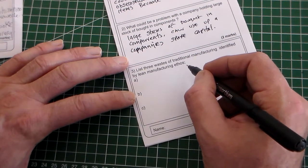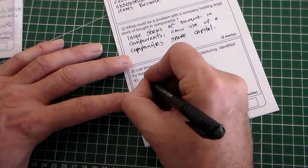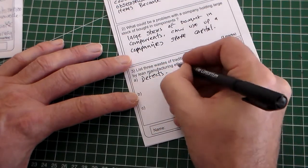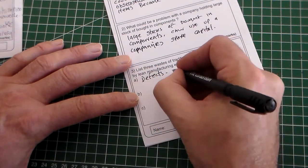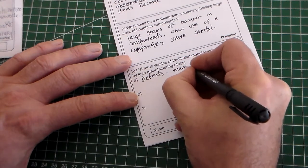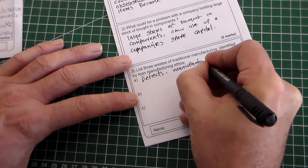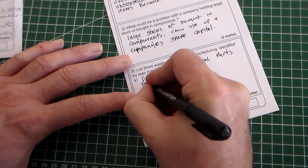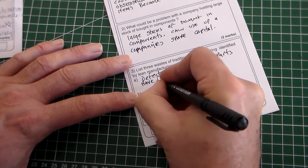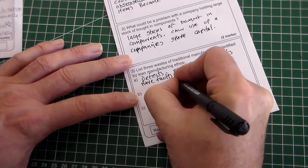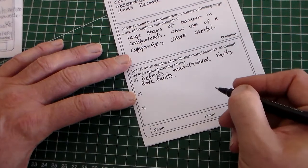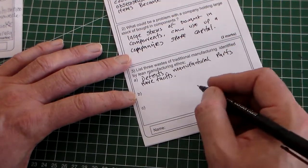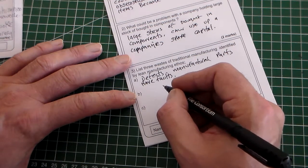List three of the wastes of traditional manufacturing that were identified by lean manufacturing ethos. So one of them is defects. Defects are just manufactured parts that have faults, and that either ends up in the parts being thrown away or having to be rectified or repaired, both of which cost money unnecessarily.